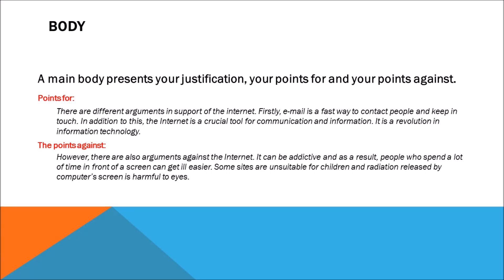You have two body paragraphs — one with points for and the second with points against. The main body presents your justification, your points for and your points against. We have examples for points for and points against. 'There are different arguments in support of the internet' — this is the topic sentence, followed by supporting sentences.